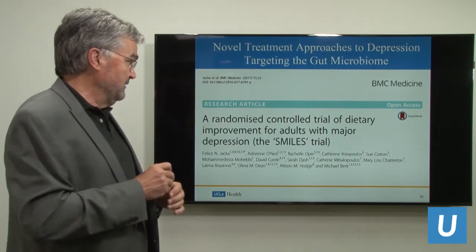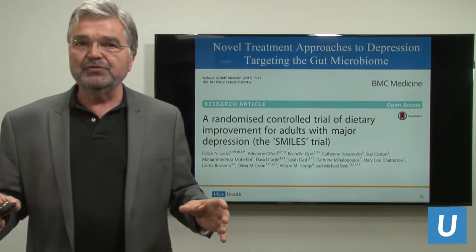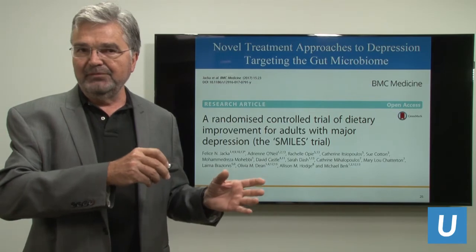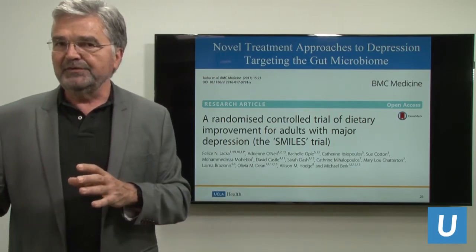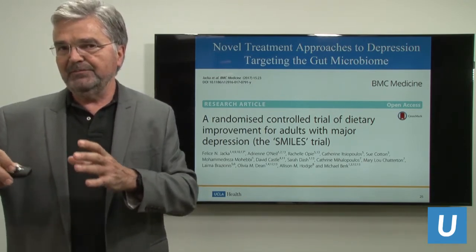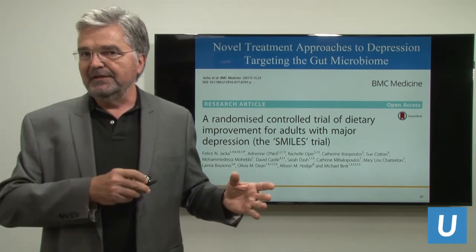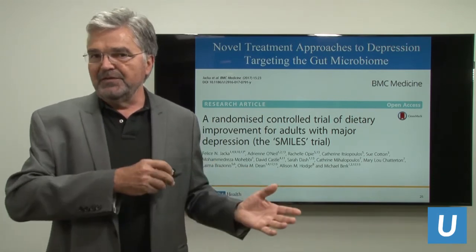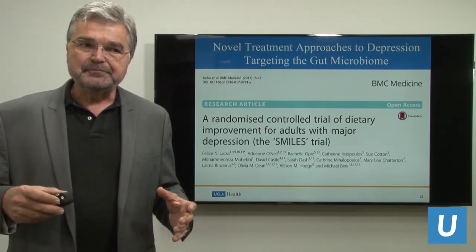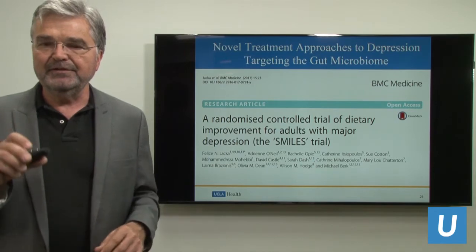Interestingly, there has also been a controlled clinical trial where patients with major depressive disorder underwent traditional therapy, but one group was switched to a Mediterranean diet. The group that received combined Mediterranean diet plus traditional antidepressant therapy did significantly better in outcomes than the one that pursued their regular diet. This is just the beginning of a new field in psychiatry where dietary therapies will almost certainly be used as an adjunct to traditional psychiatric therapy.